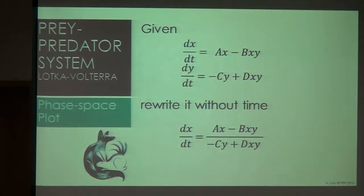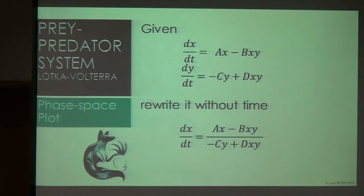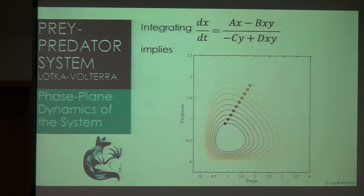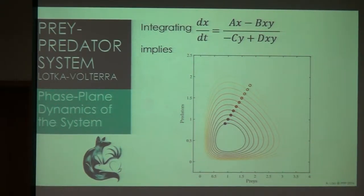Given the systems of differential equations, we can rewrite it without time — as DX over DY. Why do we need to rewrite it this way? Because we can create a phase-space plot. In the phase-space plot, the X-axis is your prey and the Y-axis is your predator. So you can see the relationship of prey and predator directly from the plot.